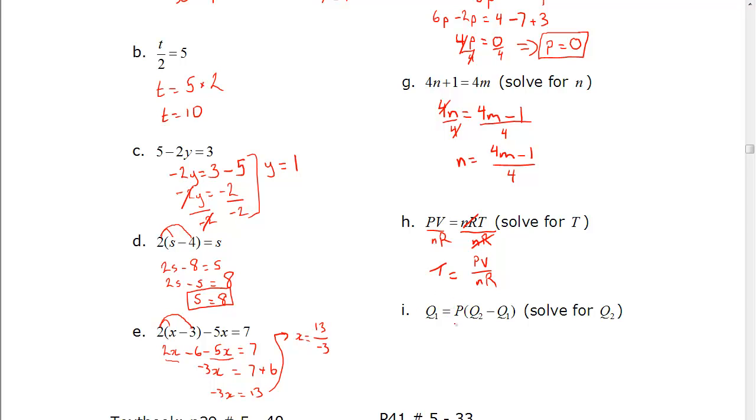For question i, there's a couple of ways to go about it. We can distribute the P into both first if you want, then isolate the Q2. Or we can actually get rid of the P first. P is multiplied by the bracket, so if we divide by P, we end up with Q1 over P equals Q2 minus Q1. We want Q2, so Q2 is going to be Q1 over P, then this Q1 comes over, minus turns into a plus, and we get the final answer.